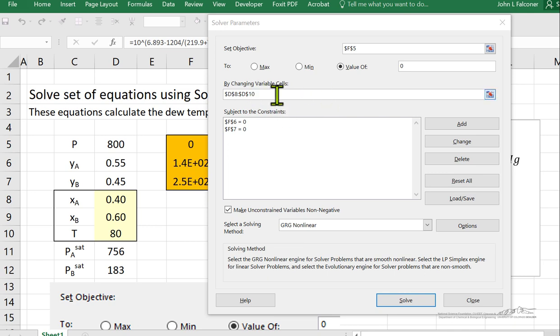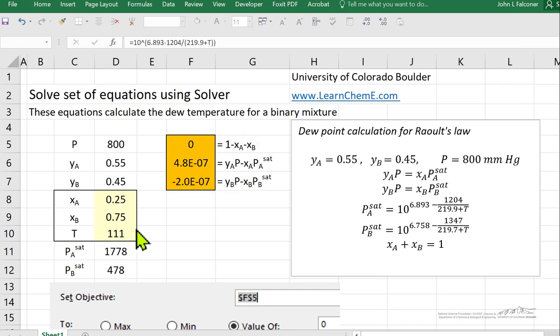So we do it by changing the three variables, D8, D9, and D10. And so we hit solve, and we're going to end up with a solution where XA is 0.25, XB 0.75, and temperature 111. I've listed these to only two significant figures because we only have two significant figures in our original data.